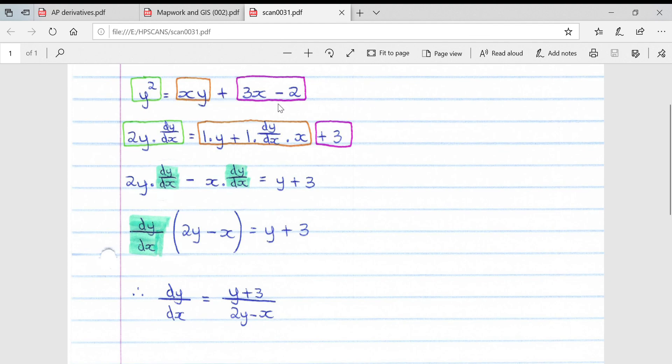Essentially this at the bottom here is your differentiated equation of y squared equals xy plus 3x minus 2. I hope this video helps with implicit differentiation.